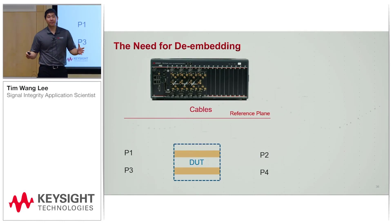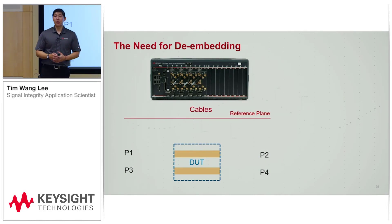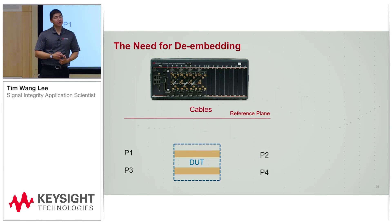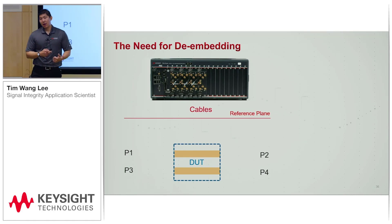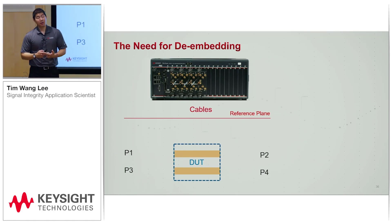Once we finish looking at our S-parameter, make sure that we know the port impedance is 50 ohms and the port assignment is correct — what we expect.